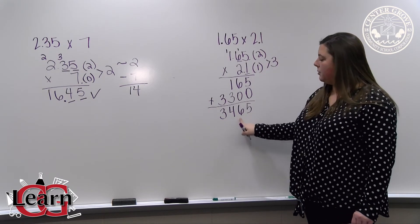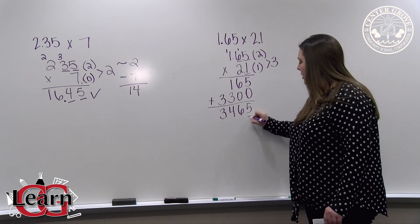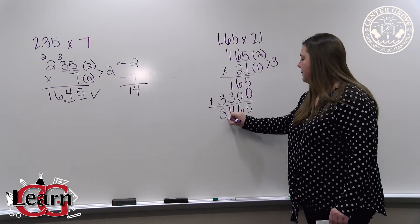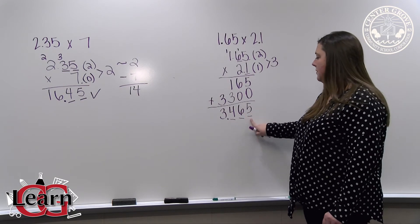So we need to have three digits to the right of the decimal point in our answer. 1, 2, 3. So our answer is 3 and 465 thousandths.